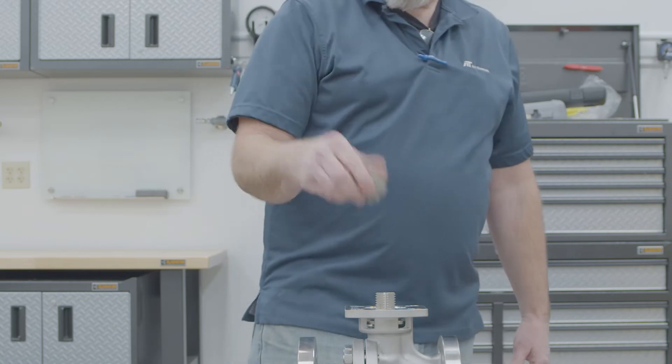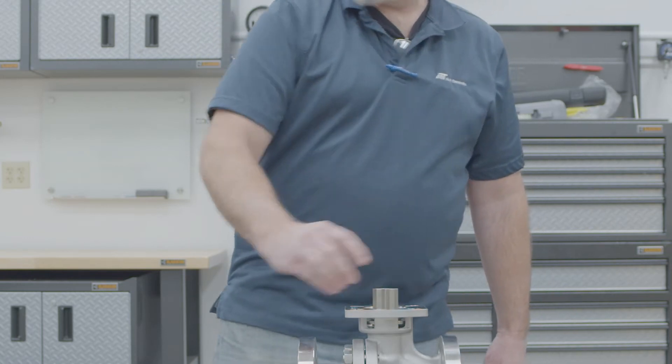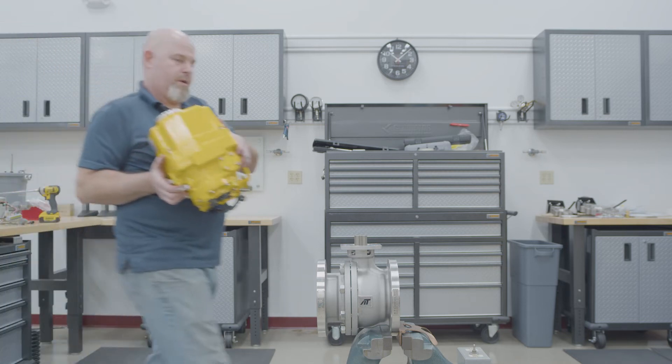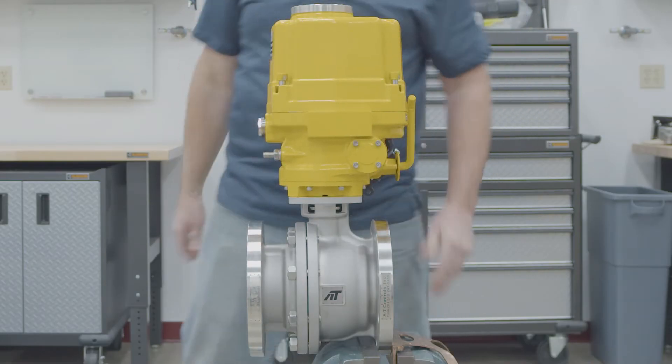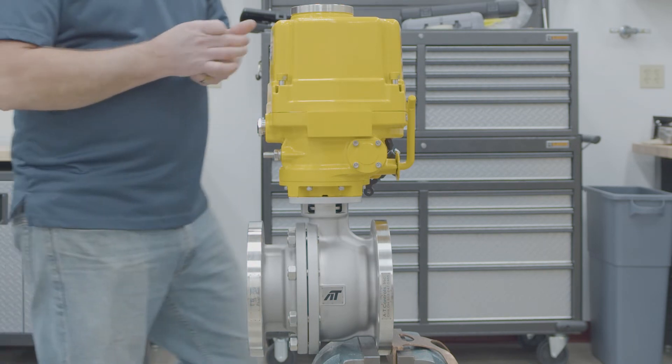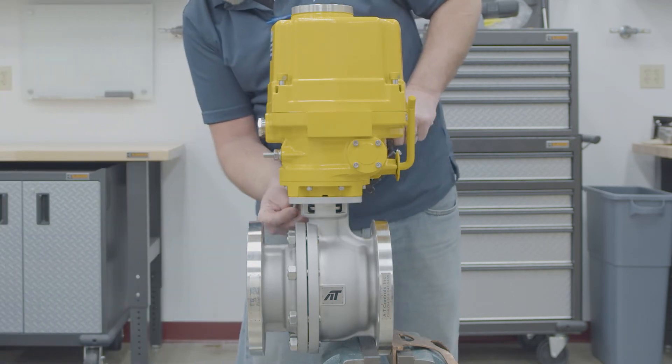We're going to install the star drive insert, and then we're going to mount the actuator. This actuator is going to take M12 bolts.